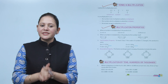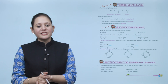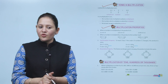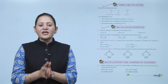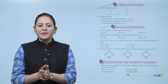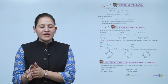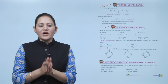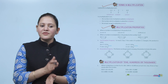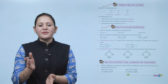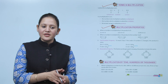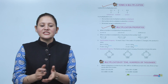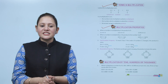Next, multiplication properties. When a number is multiplied by 0, the product is 0 — for example, 11 into 0 is 0. When a number is multiplied by 1, the product is the number itself — for example, 26 into 1 equals 26.